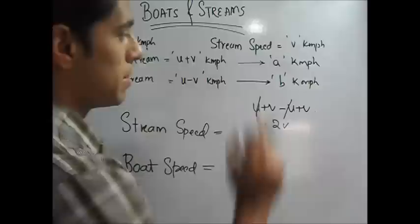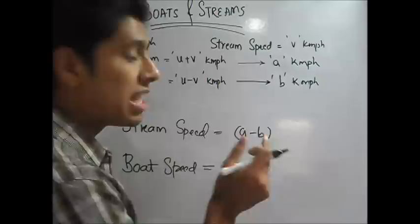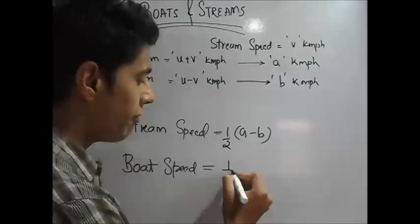This becomes 2v. This is twice your stream speed. So stream speed. Let us write a direct formula for that. So we did a minus b. But a minus b is 2v. We want just v. So you add this.